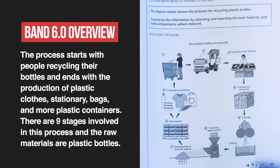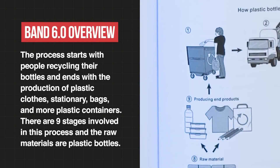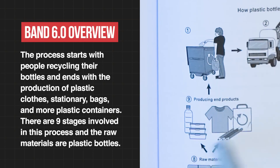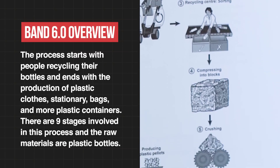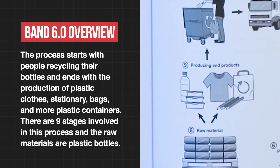So let's just look at the diagram, understand it, and then summarize the most important parts. Yes, there are nine steps. It is a cycle — it begins here, the final step is here, and then it begins again. It starts off with putting plastic bottles into bins, and ends with making a variety of plastic products. How do they do that? They collect the bottles, they sort them, they process them — which creates raw materials — and then you make stuff out of it. That's it. Don't make it any more complicated than that.